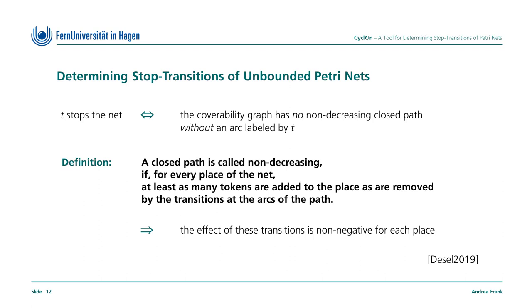We summarize again and mention the definition of the term non-decreasing closed paths. A transition stops the net if and only if there is no non-decreasing closed path of the coverability graph without an arc labeled by the transition's name. Non-decreasing is defined as follows. A closed path is called non-decreasing if, for every place of the net, at least as many tokens are added as are removed by the transitions at the arcs of the path. Hence, the effect of these transitions is non-negative for each place.